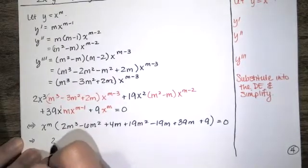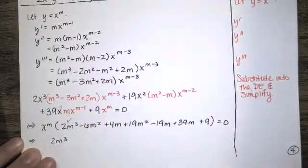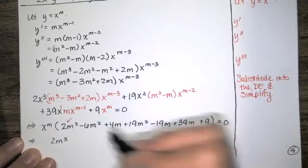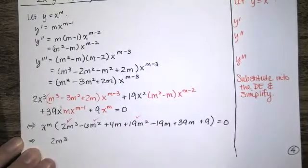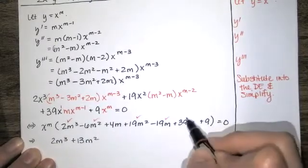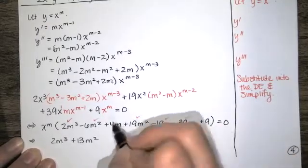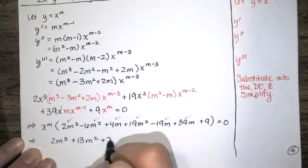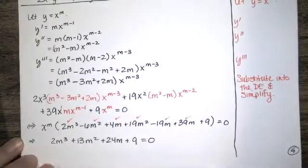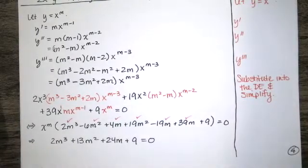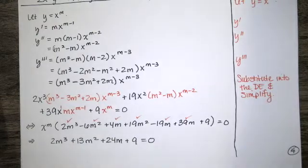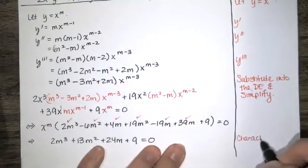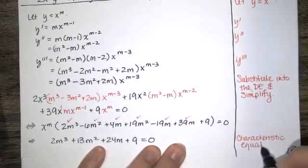Let's simplify. We have our 2m cubed term. Grouping the m squared terms: 19m squared minus 6m squared gives 13m squared. Grouping the m terms: negative 19m plus 39m is 20m, plus 4m gives 24m. And then we're adding 9. That's not at all obvious how to factor, so I'm going to use possible rational roots to find the values of m that cause that characteristic equation to equal 0.